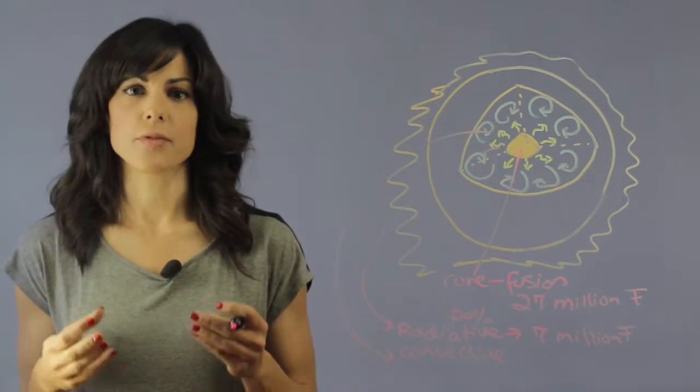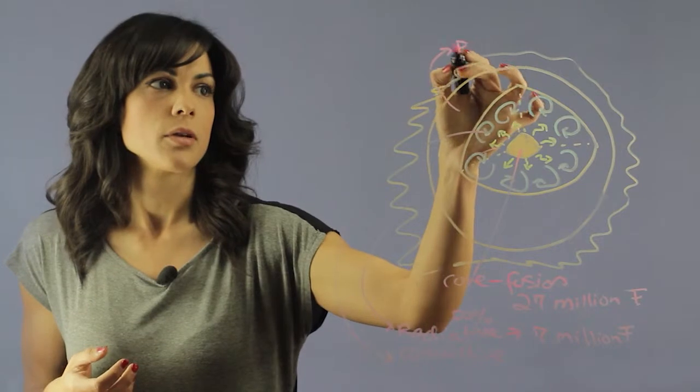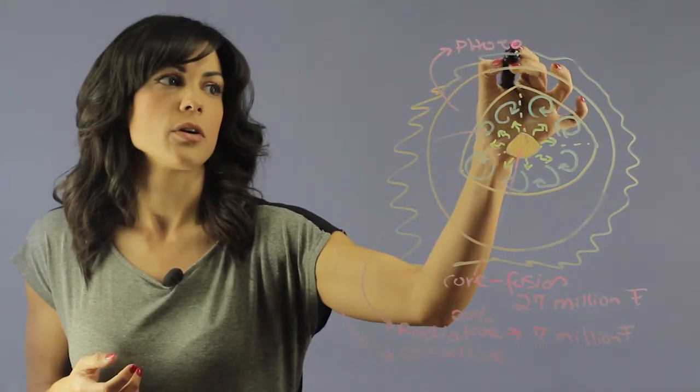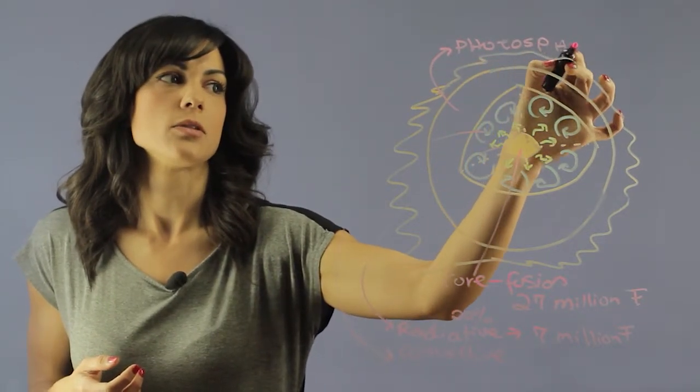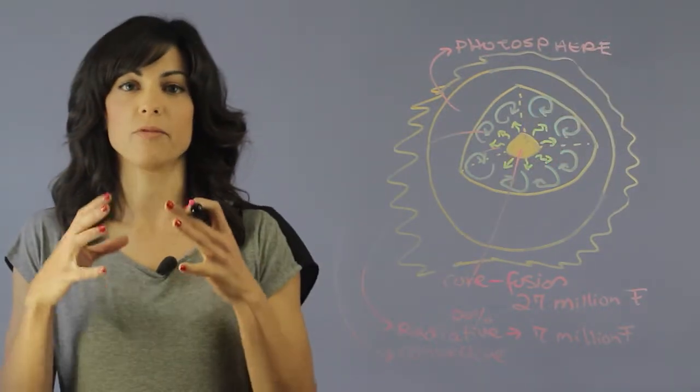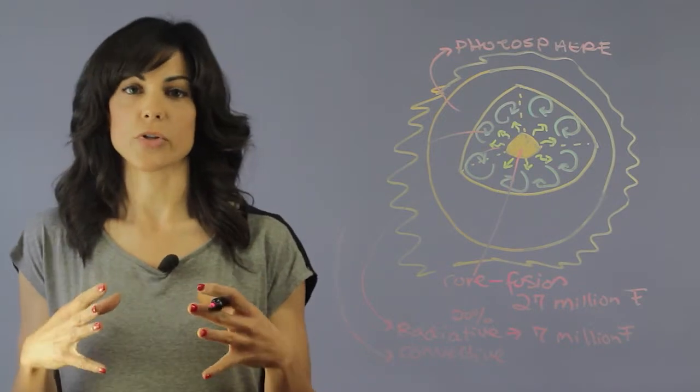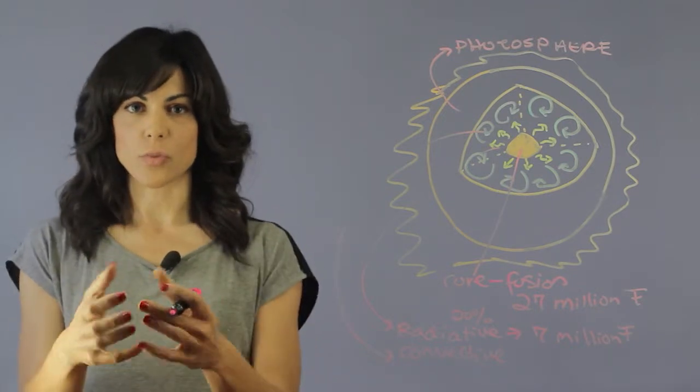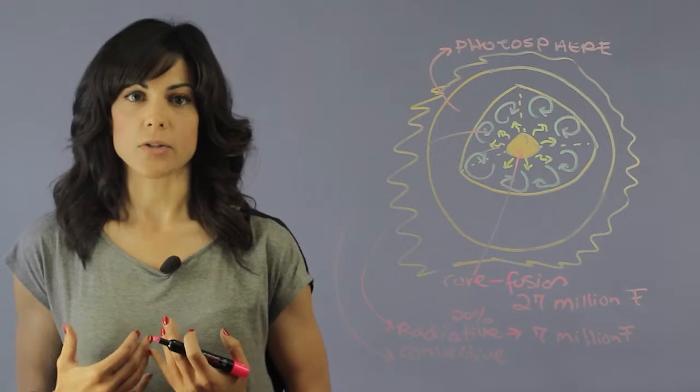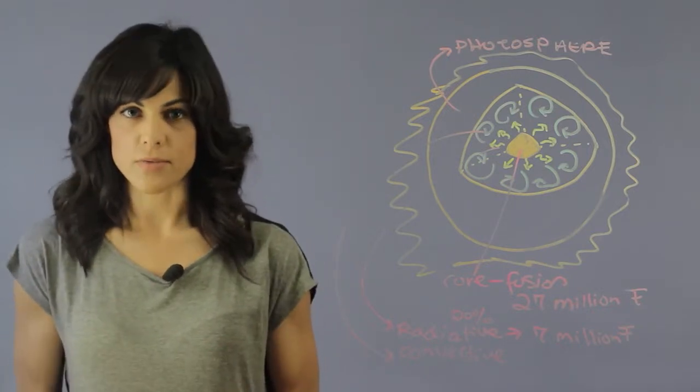After that we have the photosphere, and the photosphere is the layer that you're thinking of. The photosphere is when the Sun goes from being opaque to being transparent, so this is where visible light is actually emitted. This is considered the surface of the Sun because this is where the visible light is being emitted towards us. This is kind of the visible part of the Sun, so therefore we call that the surface.